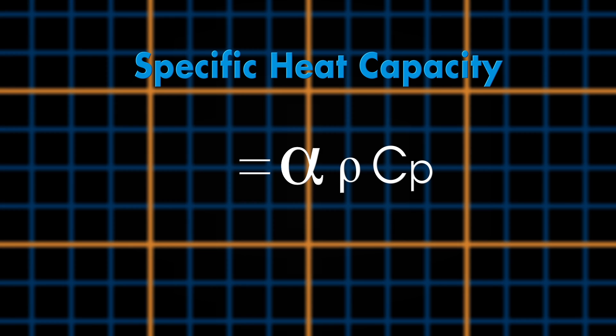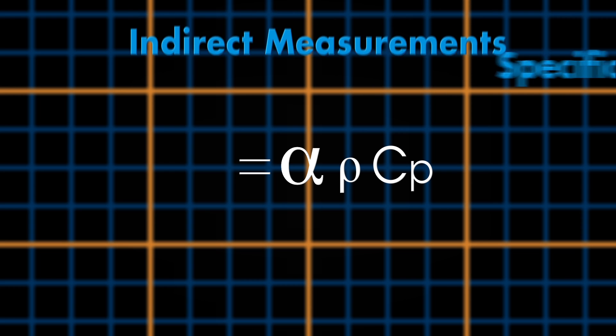As you know, measuring thermal diffusivity using laser flash is a direct method, but in order to measure specific heat capacity we need to make comparative or indirect measurements.